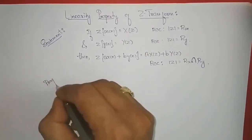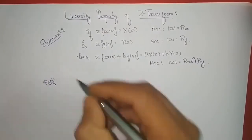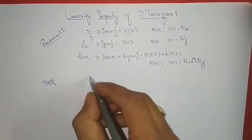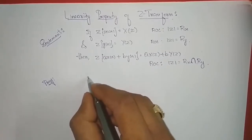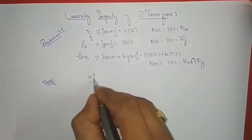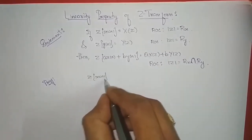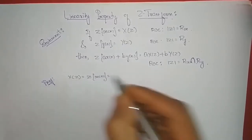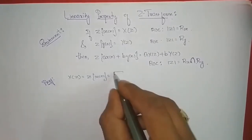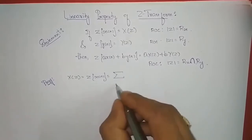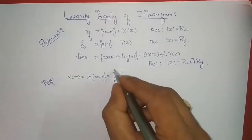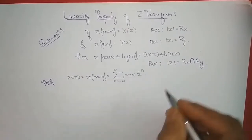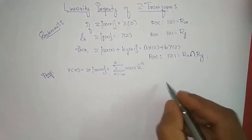Proof: From the definition of the Z-transform, it is something like this — the Z-transform of x(n) is equal to X(z), which equals the summation with n varying from minus infinity to infinity of x(n) times z to the power of minus n. This is as per the definition of the Z-transform.